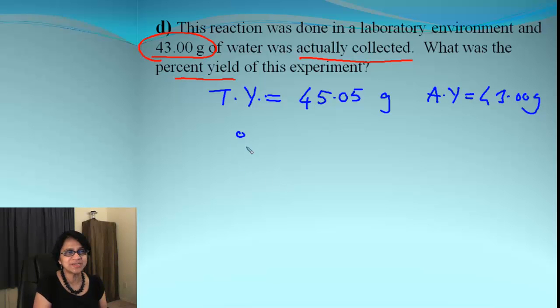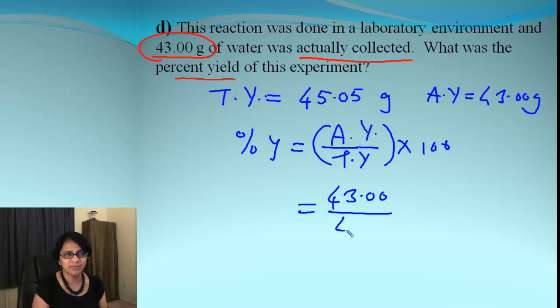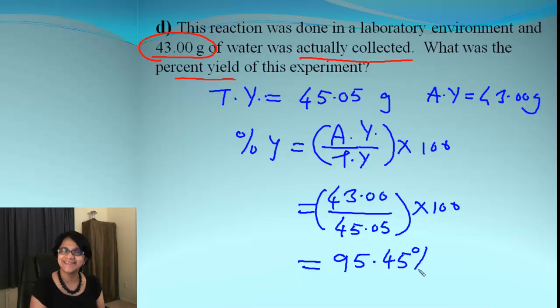What is the formula for percent yield? It is actual yield divided by the theoretical yield times 100. So that is 43.00 divided by 45.05, and that times 100. What do we get? We end up having 95.45 percent yield.